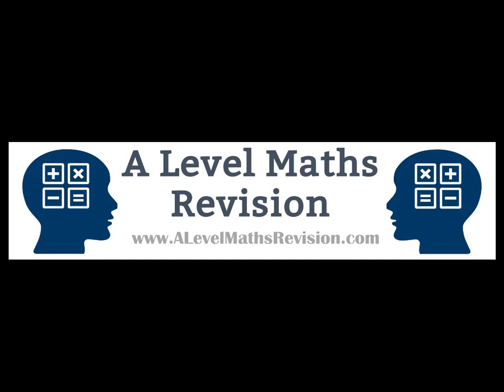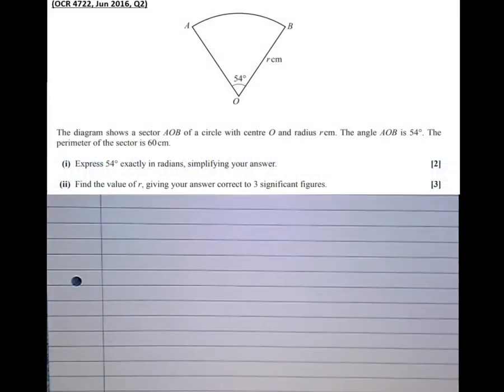This exam question on circle sectors and radians brings together everything we've done in the tutorial so far. It brings together converting from degrees to radians and then the circle sectors part. So let's have a look. It says the diagram shows a sector AOB of a circle with centre O and radius R. The angle AOB is 54 degrees. The perimeter of the sector is 60 centimeters.